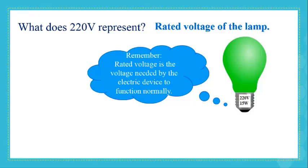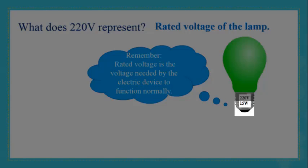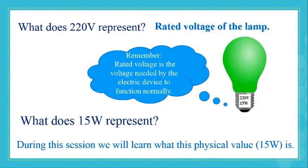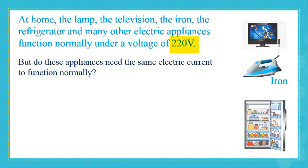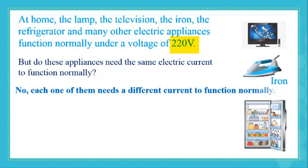Another inscription is written: 15W. What does this inscription represent? At home, lamps, TVs, irons, refrigerators, and many other electric appliances function normally under a voltage of 220V. But do these appliances need the same electric current to function normally? No, each one of them needs a different value of current to function normally.